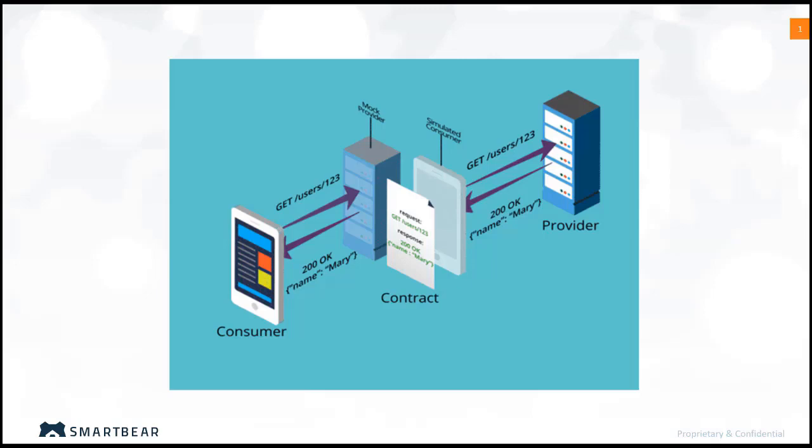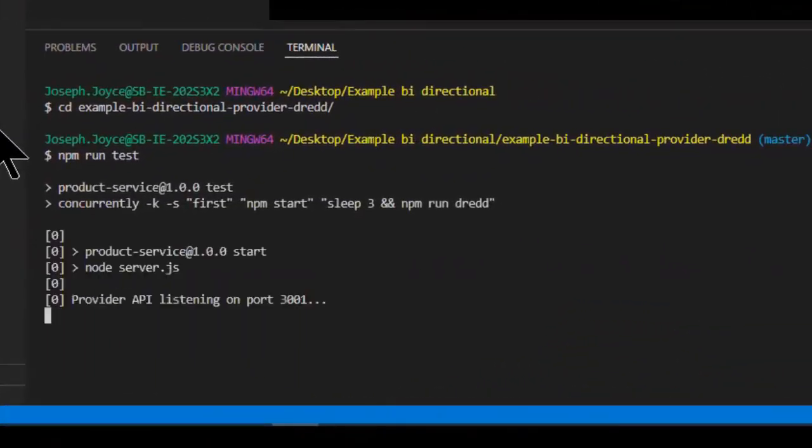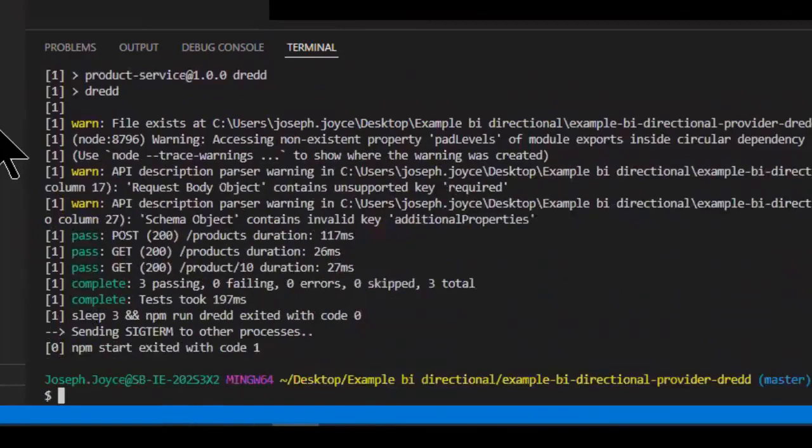Without contract testing, the only way to ensure that applications will work correctly together is by using expensive and brittle integration tests. PACT is a code-first tool for testing HTTP and message integrations using contract tests.